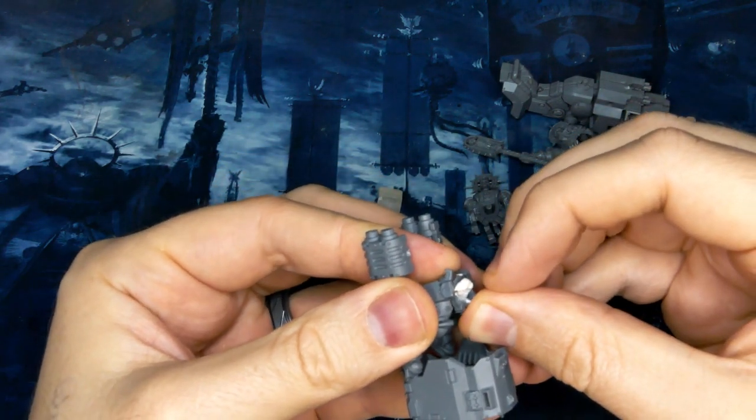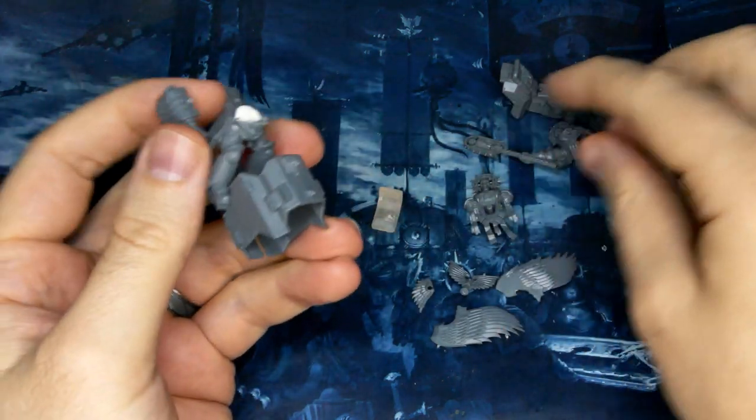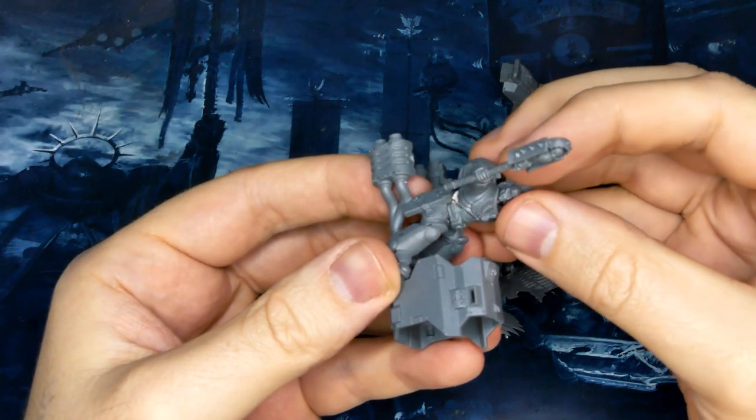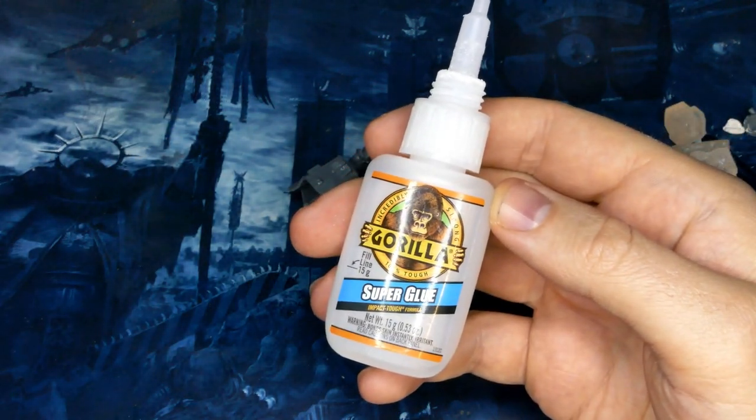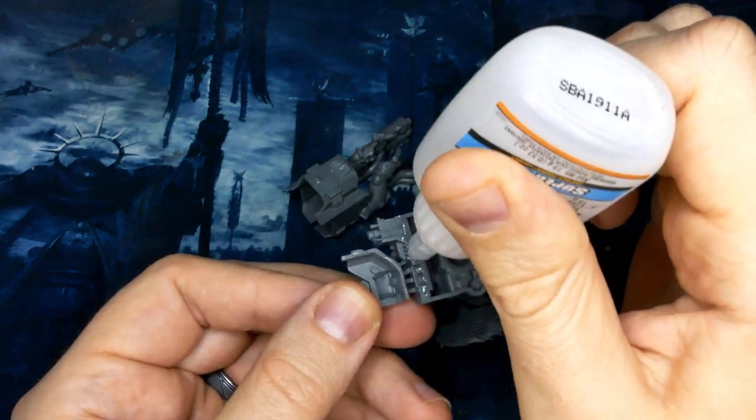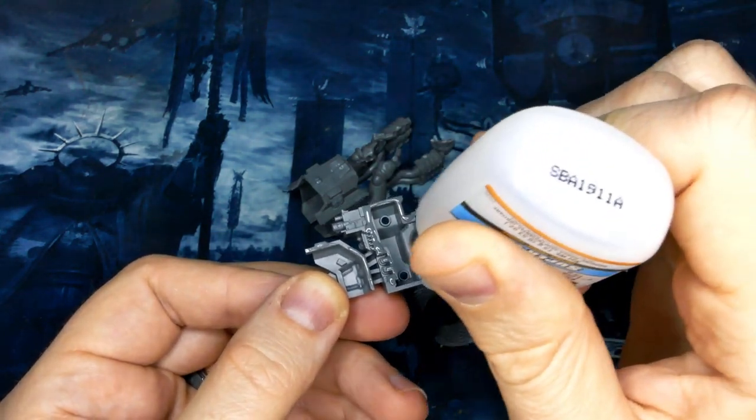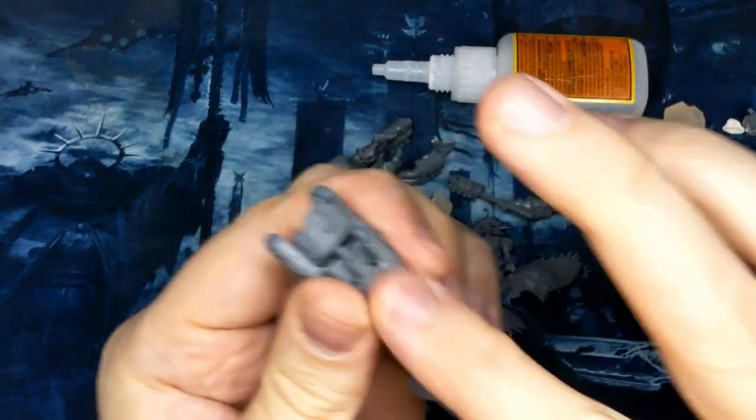Have I mentioned that Sticky Tack is your best friend in this? If I haven't, Sticky Tack is your best friend. Coming in behind that at a close second is Gorilla Glue, because this stuff bonds everything. I'm just making sure I get it all around my seams real good, so I get a good solid connection and I don't get massive seam lines.